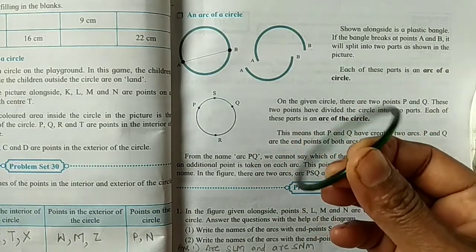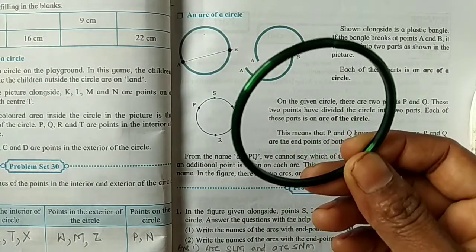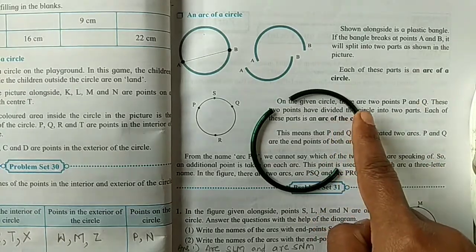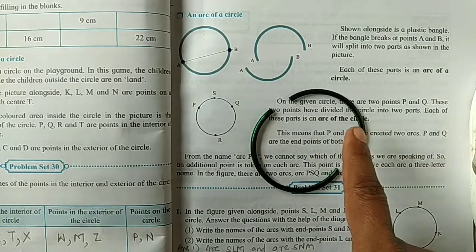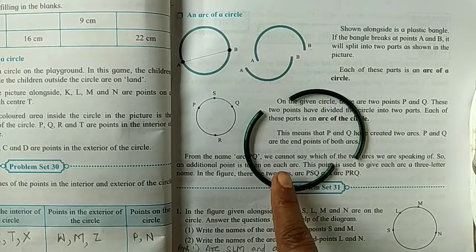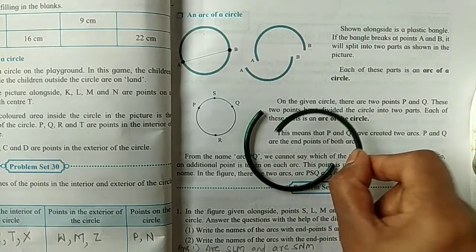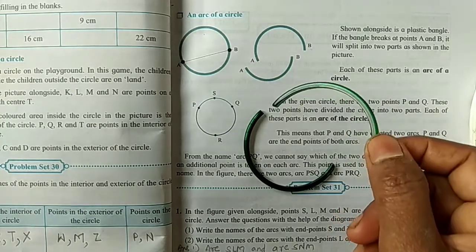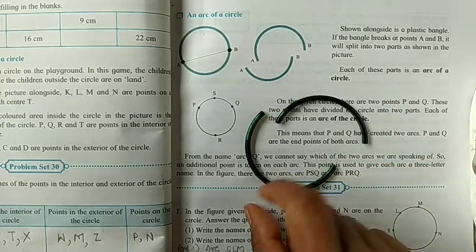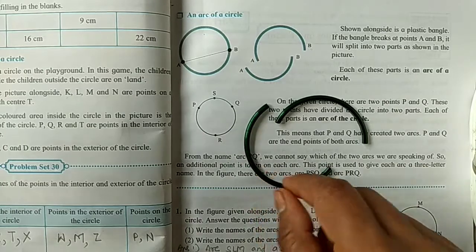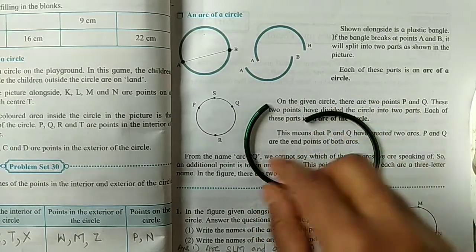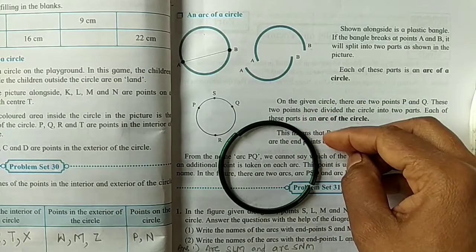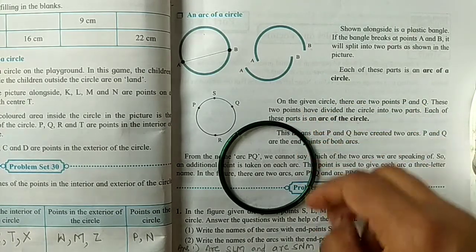Yes, I also take one bangle. If the bangle breaks at any point, it will split into two parts as shown on the screen. Okay, so each of these parts is an arc of a circle. Each of these parts is an arc of a circle. If we join these two points, we will get a circle.